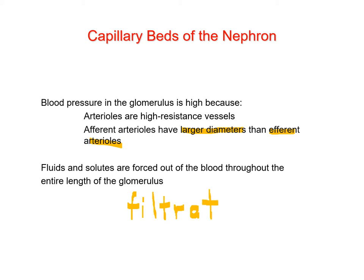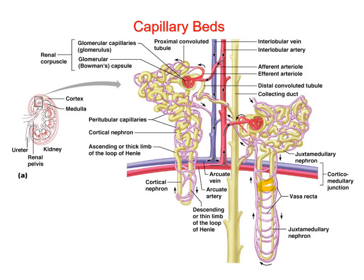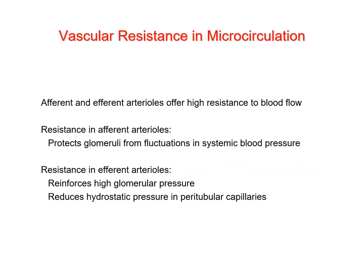The filtrate has quite a large volume; most of the water and NaCl will be reabsorbed in the proximal convoluted tubule. The peritubular capillaries — that second capillary bed — are a low-pressure, porous capillary network adapted for absorbing molecules being reabsorbed from the tubular structure. The vasa recta are the long efferent arterioles of juxtamedullary nephrons that surround the loop of Henle.